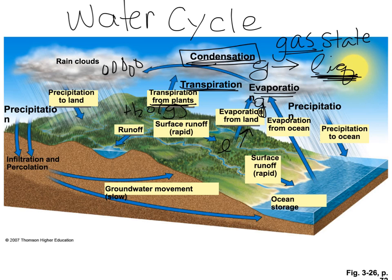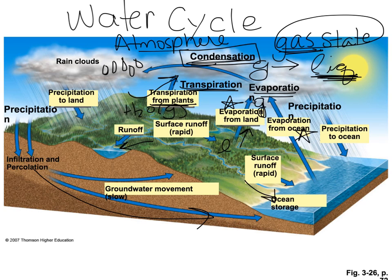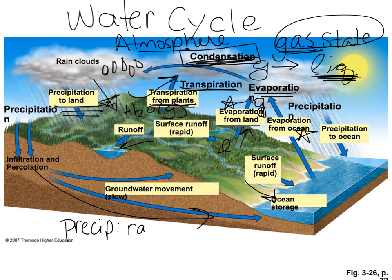By looking at this diagram, you should be able to follow a water molecule. Water runs through the ground and can run off into oceans and rivers. Plants may take up that water and release it back as a gas through transpiration. Water may evaporate from the land or ocean, rising into the atmosphere as a gas. It may then condense into clouds and come back down as precipitation — rain, snow, sleet, or hail.